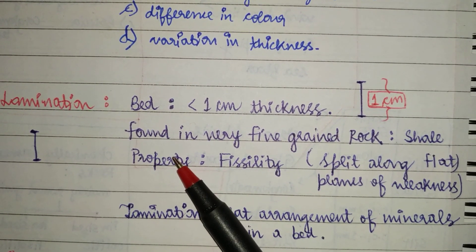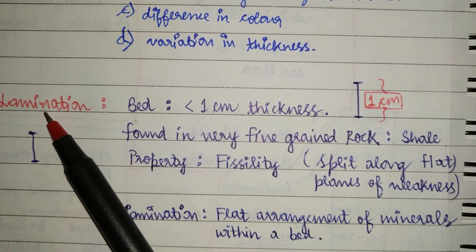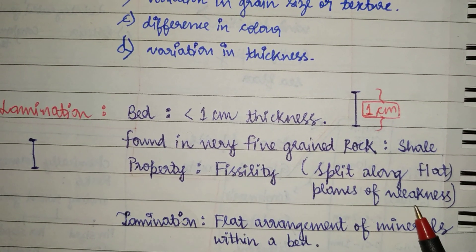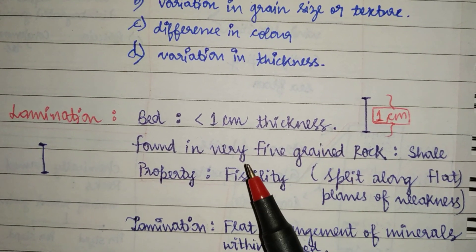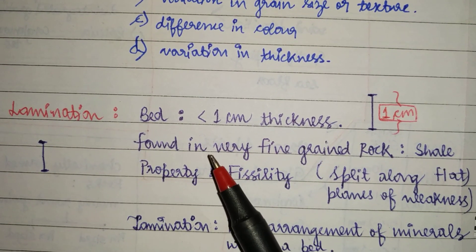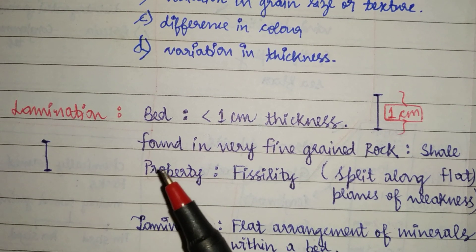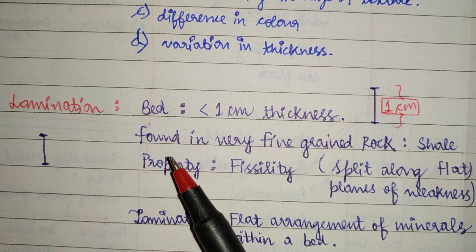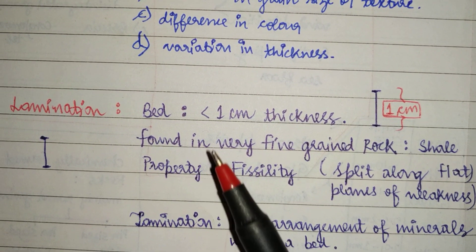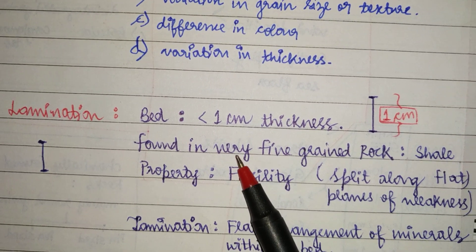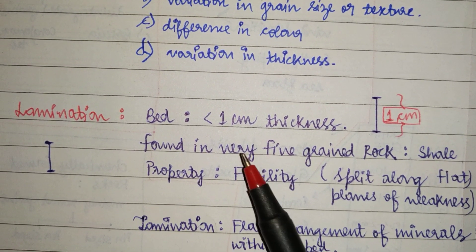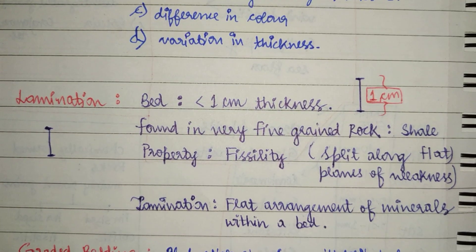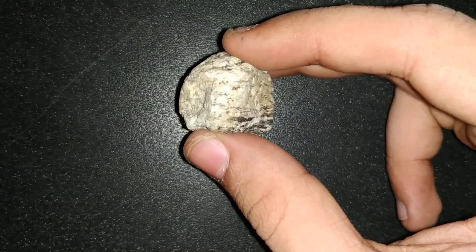These laminations give the property of fissility — that is, they split along flat planes of weakness. To visualize this, imagine a Cadbury chocolate or wafers. With your nail, you can take out the top layer from the bottom one. This property is known as fissility. Let's now see an example of a lamination.